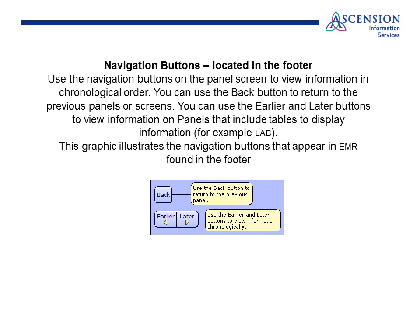Navigation buttons located in the footer: use the navigation buttons on the panel screen to view information in chronological order. You can use the Back button to return to previous panels or screens. You can use the Earlier or Later buttons to view information on panels that include tables to display information, for example, lab. This graphic illustrates the navigation buttons that appear in the EMR footer.